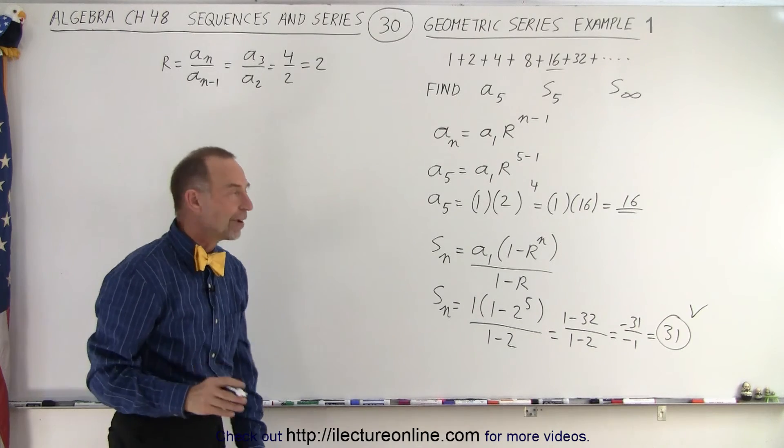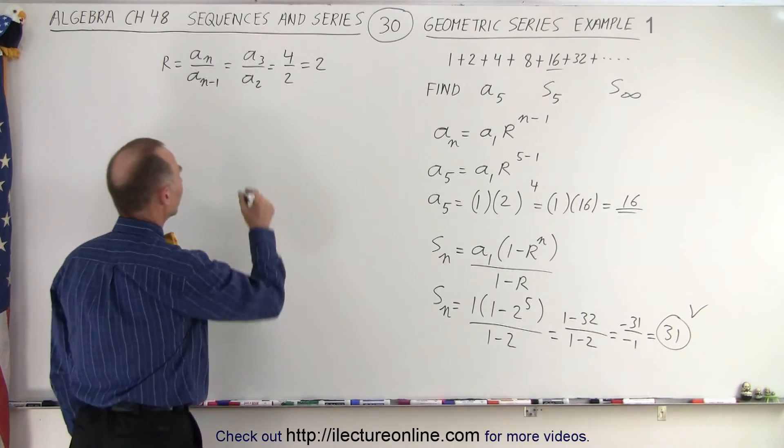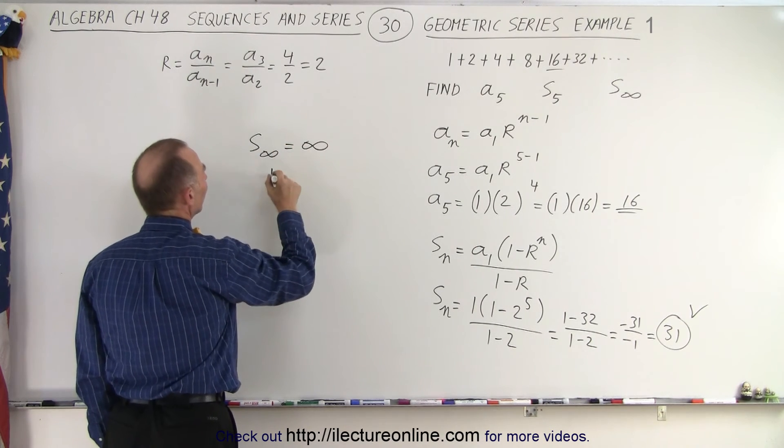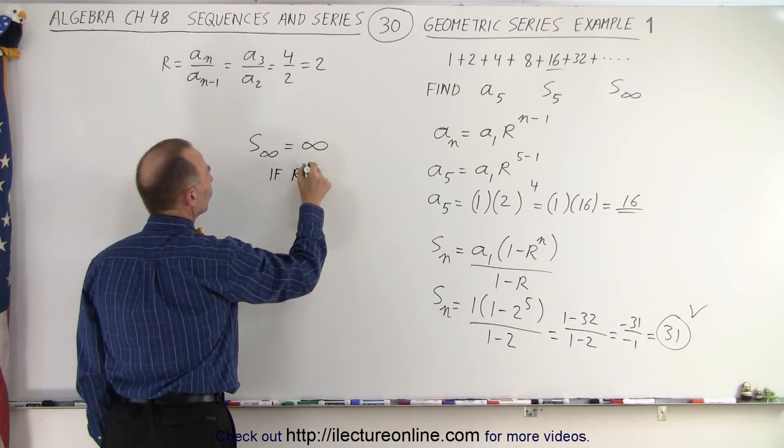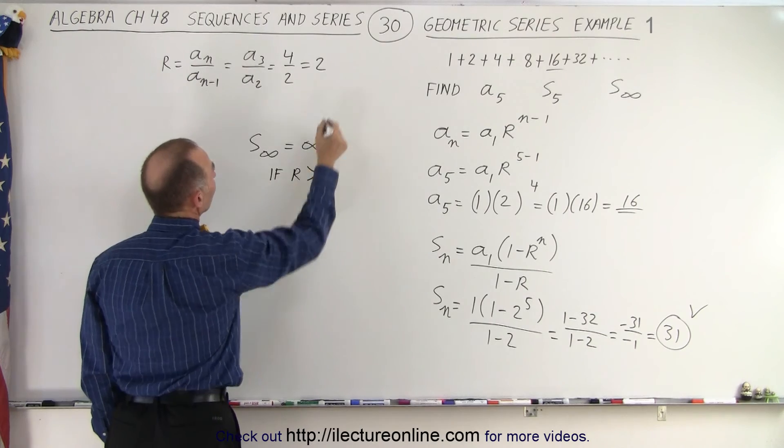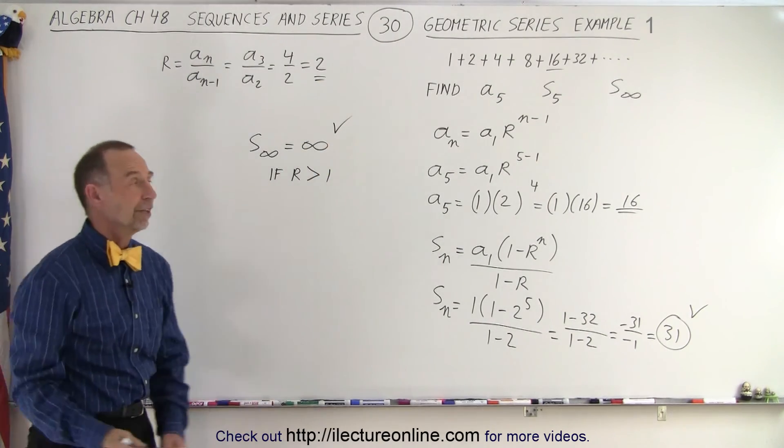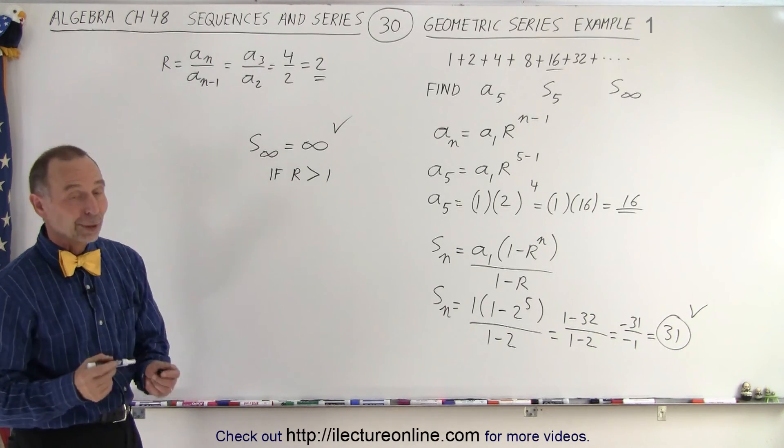Finally, they want us to find the infinite sum, but we realize that the infinite sum is equal to infinity if the common ratio is greater than 1. And certainly, since it's greater than 1, we know that the infinite sum must be infinity, and that seems quite clear when you look at it.